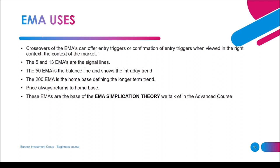The crossovers of the EMAs can offer entry triggers or confirmation of entry triggers when viewed in the right context. EMAs are there over and over again, but you need to know the market context — the market maker context — to be on the right side of trades. The 5 and 13 EMAs are the signal lines. The 50 EMA is the balance line and shows the intraday trend. The 200 EMA is the worm best, defining the longer-term trend, and price always returns to the worm best. These EMAs are the basis of the EMA simplification theory discussed in the advanced course.